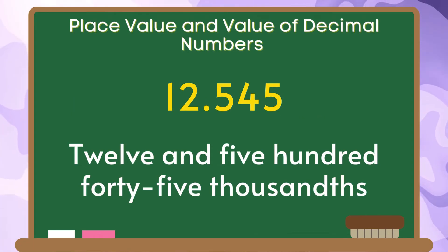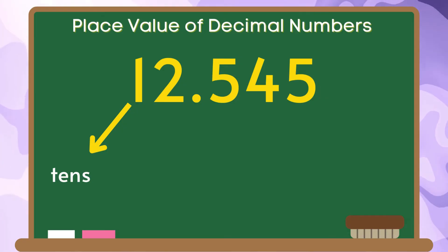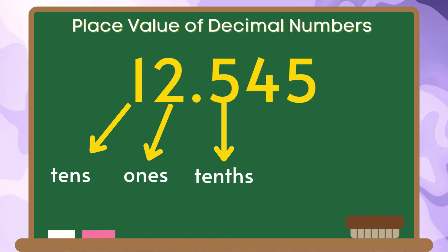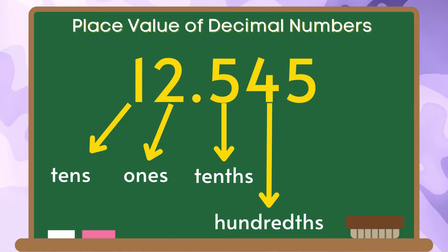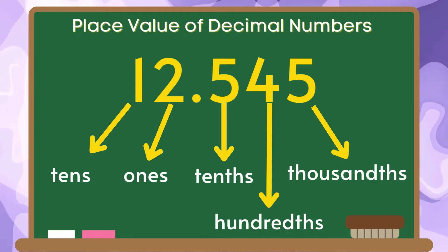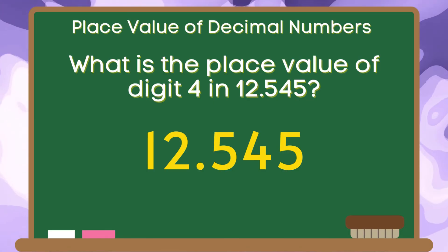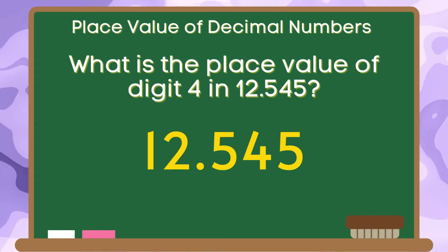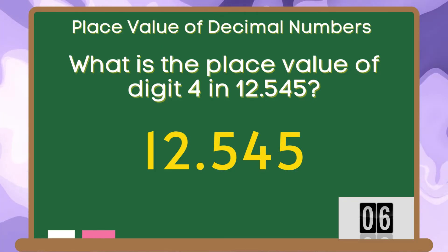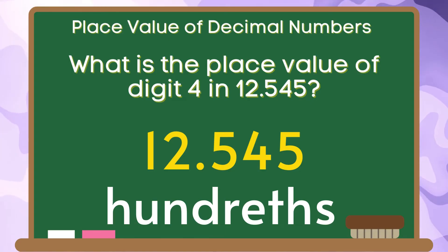Let us have more examples. We have twelve and five hundred forty-five thousandths. The place value of the digit one is tens. The place value of the digit two is ones. The place value of the digit five is tenths. The place value of the digit four is hundredths. And the place value of the digit five is thousandths. What is the place value of the digit four in twelve and five hundred forty-five thousandths? The correct answer is hundredths.